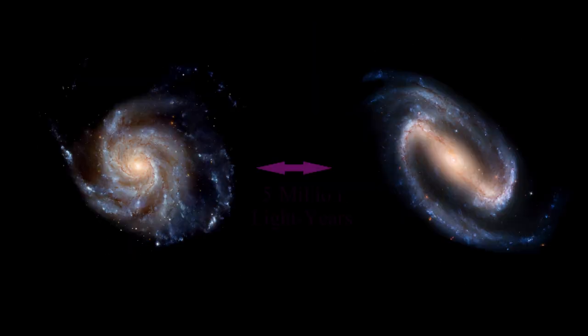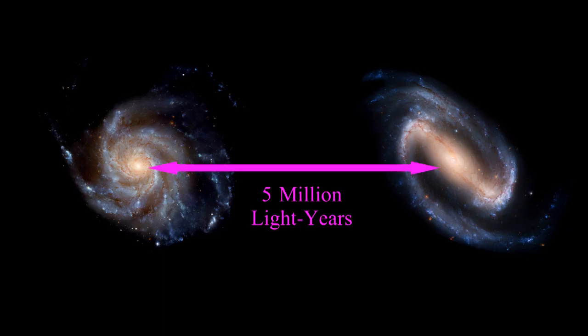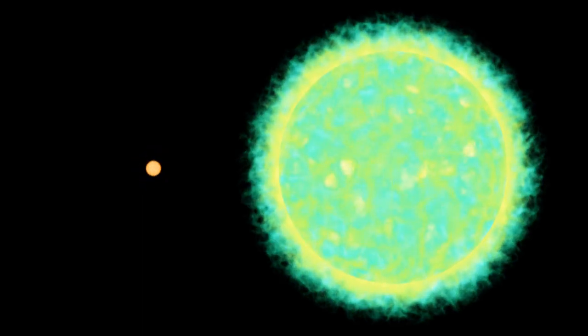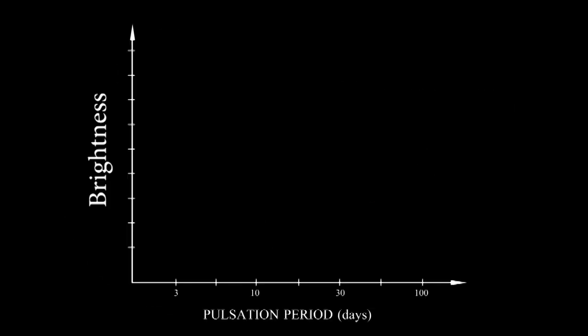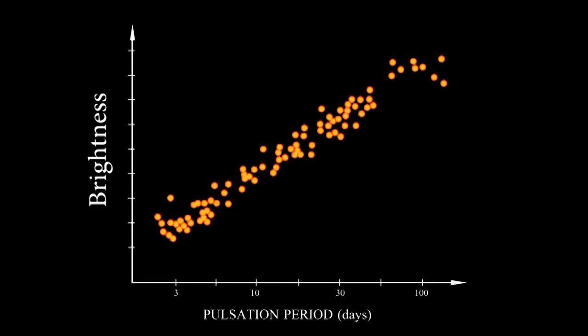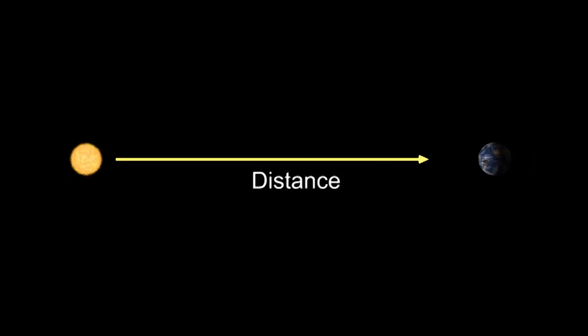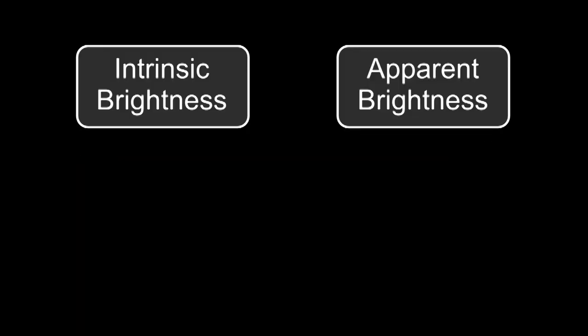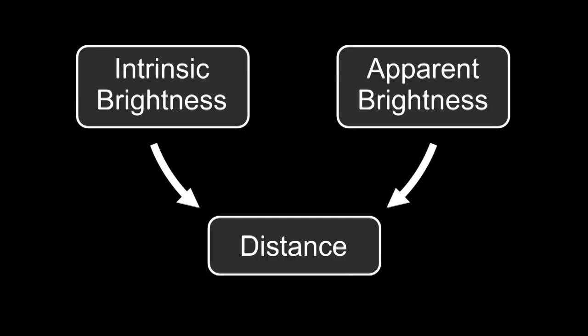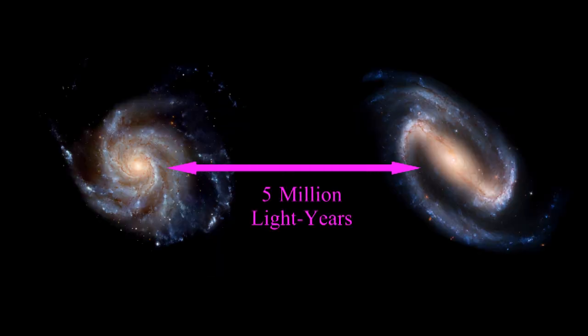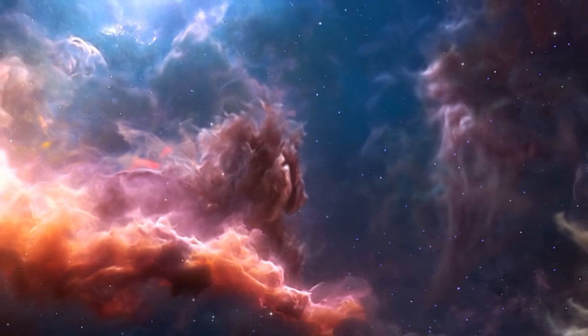These unstable stars, the Cepheid variables, are so important because they let us measure large distances. If a Cepheid variable is small and dim, it will pulse quickly. If it's large and bright, it will pulse slowly. This was first discovered in 1908 by Henrietta Swan Leavitt. By measuring how fast the star pulses, you can determine its brightness. Once you know its intrinsic brightness, you can compare that against its apparent brightness. That's how bright it appears to us after the light has traveled from the star to us. By comparing these two brightnesses, you can calculate the distance to the star. These stars give us a way to measure large distances, and so they are essential to modern astronomy.